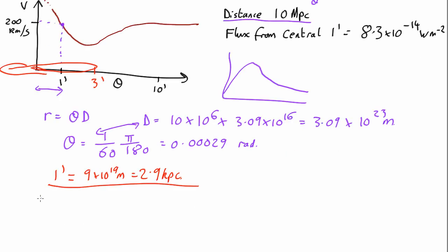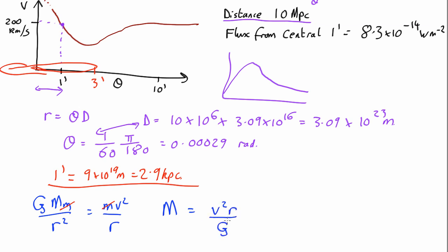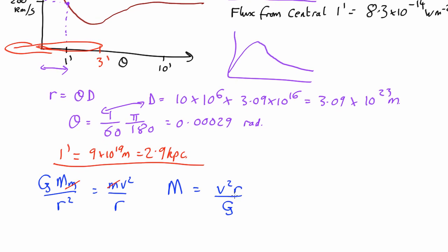Let's estimate the mass. We need to balance gravity: G M m over r squared equals m v squared over r. The mass of whatever is orbiting cancels out, and we end up with the mass closer in than 1 arcminute equal to v squared times r over G. The velocity is 200 km/s, i.e. 200,000 m/s, and r is the value we just calculated. So at 1 arcminute we get a mass of 5.4 times 10 to the 40 kilograms. The Sun is 2 times 10 to the 30 kilograms, so this is about 20 billion solar masses — a lot of mass in the inner few kiloparsecs.